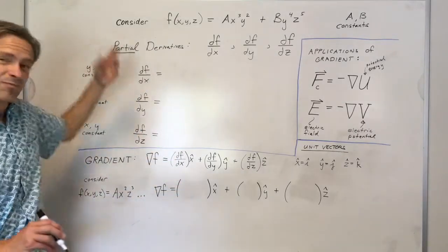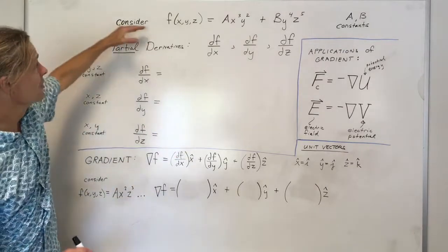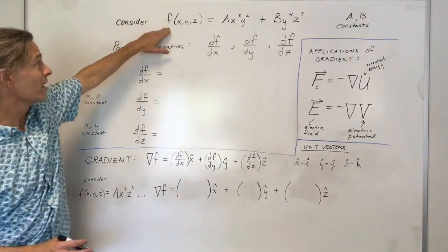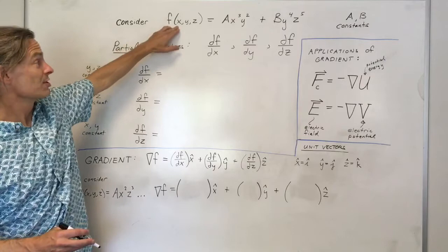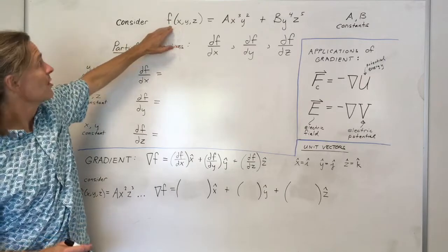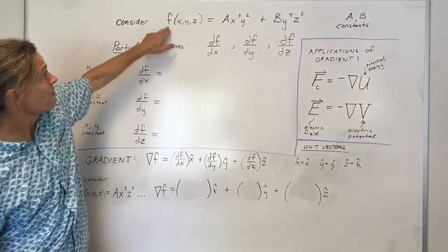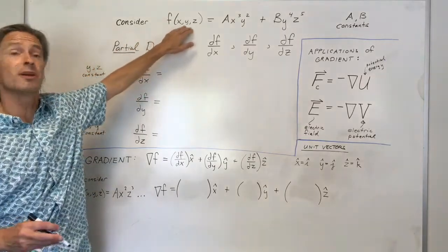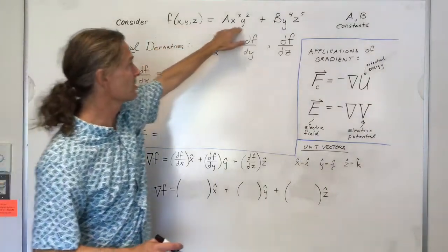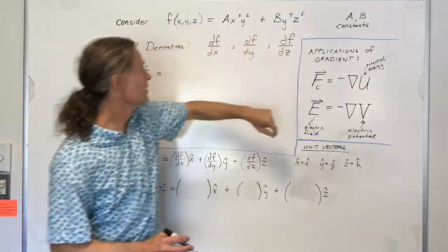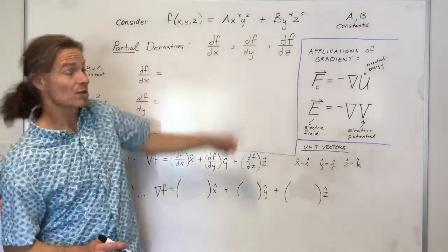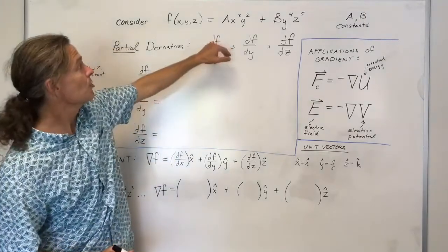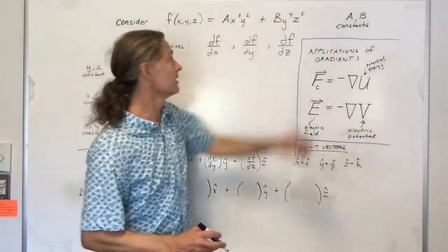To talk about partial derivatives, let's consider a function f that is a function not only of x, but also of y and z. So this is a function of three independent variables, and let's say it has this form — basically a mishmash of x, y, and z, and two constants, which we'll call a and b.